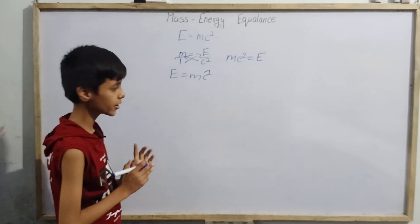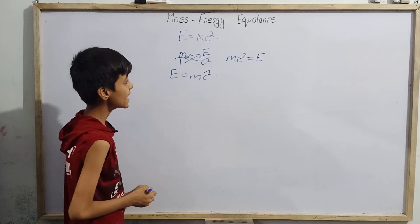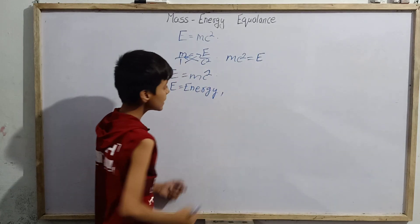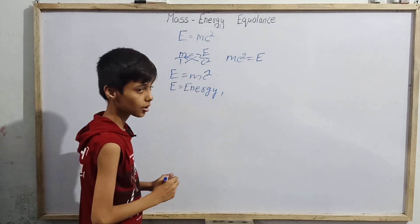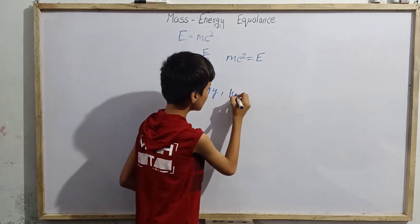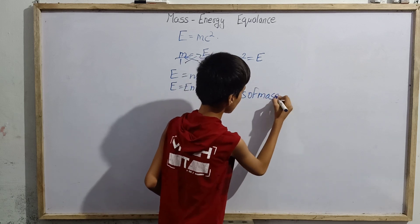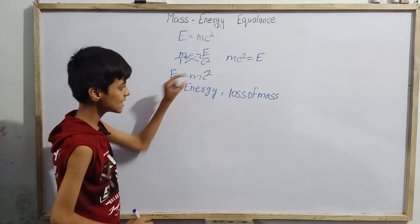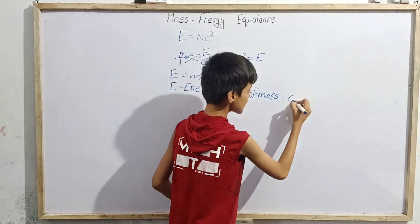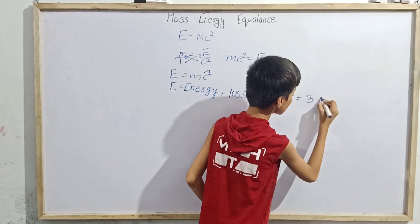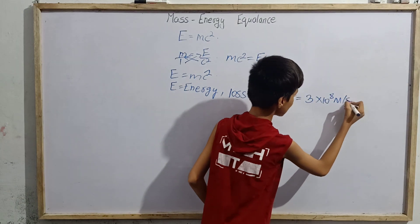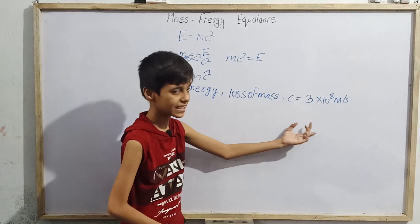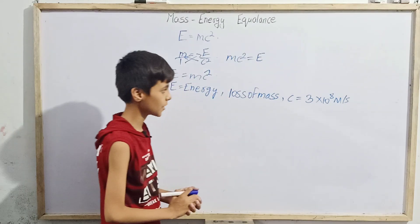Now let me tell you what those symbols actually stand for. E stands for energy. M is not simply mass — it is loss of mass. C means speed of light, whose value in vacuum is 3 times 10 raised to the power 8 meters per second. Generally in any question we take c as 3 × 10⁸ meters per second.